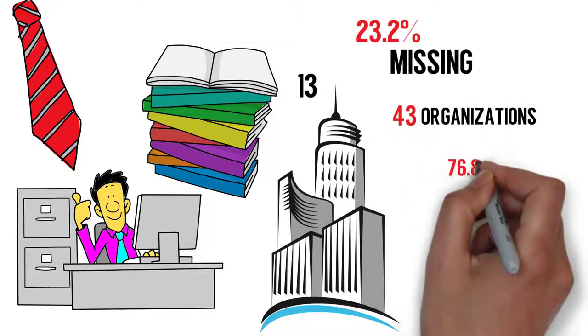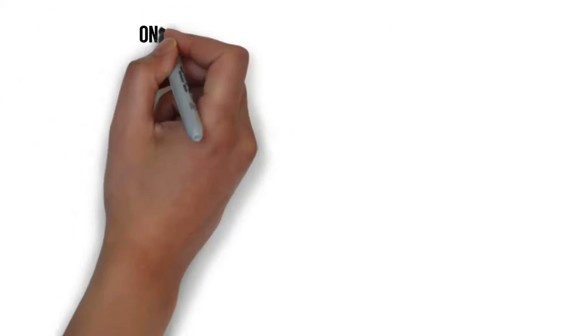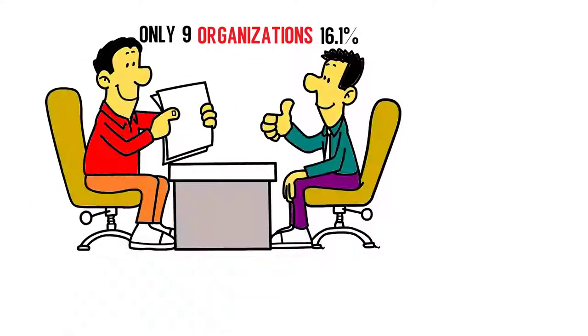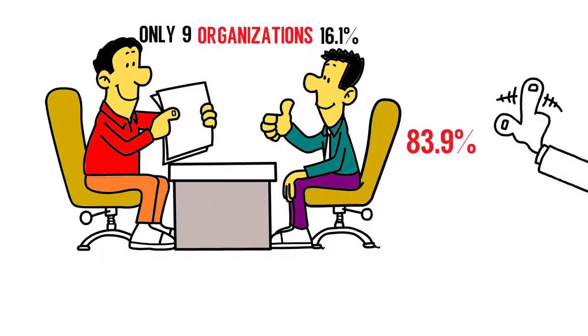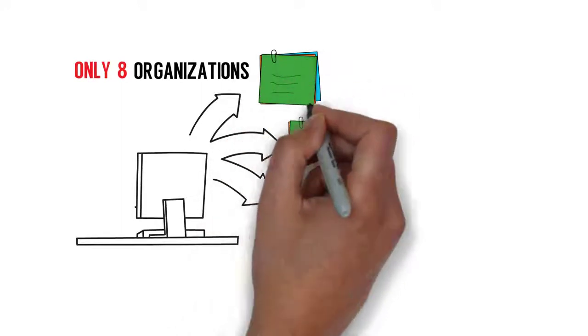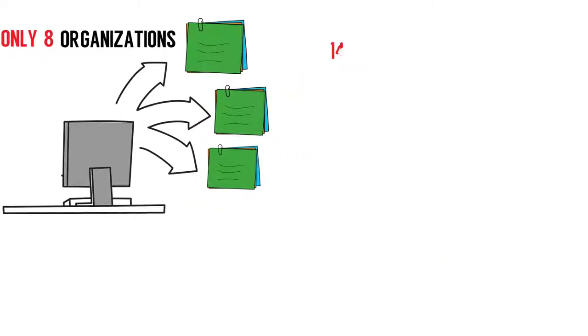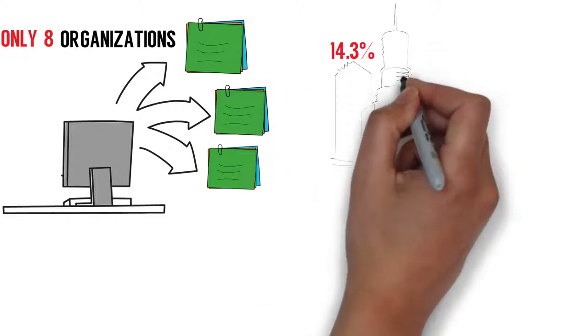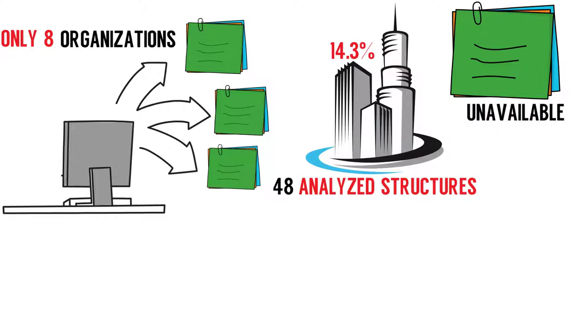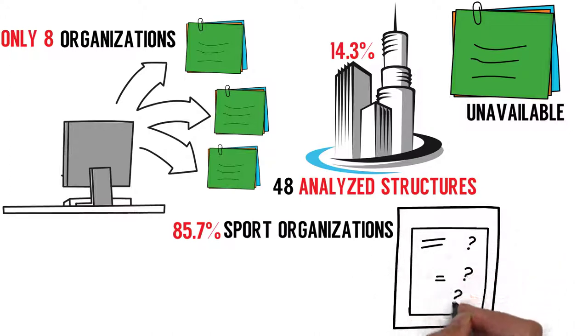Only nine organizations, 16.1%, have considered publishing the scope of responsibilities of their management and 83.9% don't include such division on their web pages. Only eight organizations have published information about the participation and functions held by each board member in other institutions, forming 14.3% of all analyzed organizations. In 48 of the analyzed structures such information is unavailable, forming 85.7% of sport organizations with missing data on this indicator.